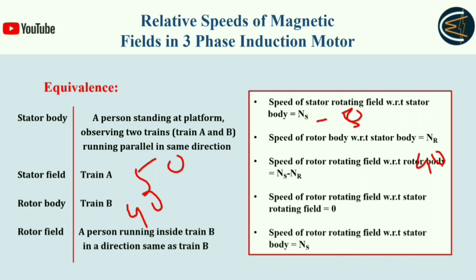The last point: the speed of rotor field with respect to stator body is NS. The rotor field is your friend running at 10 km/h inside train B. But for the outside world — that is, with respect to the stator body, which is you standing on the platform — your friend's speed is 40 plus 10 equals 50 km/h, which is nothing but NS. So this concept should now be clear.